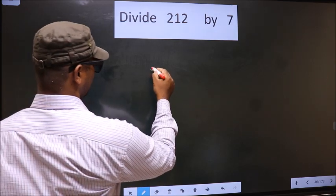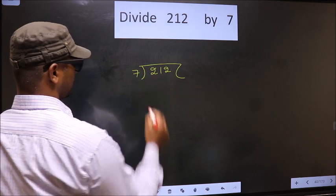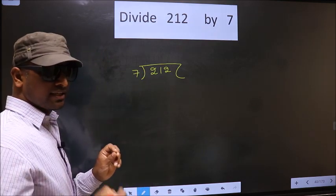That is, 212 divided by 7 here. Okay, next.